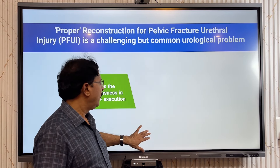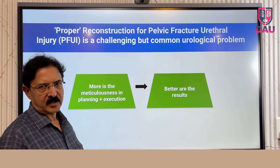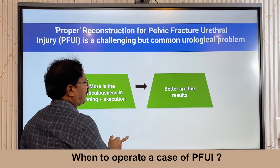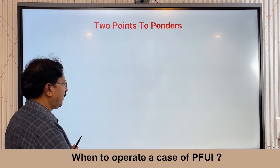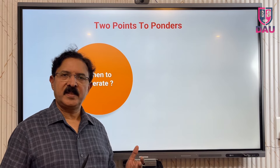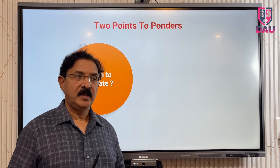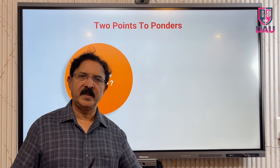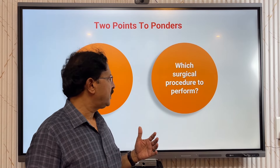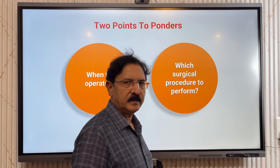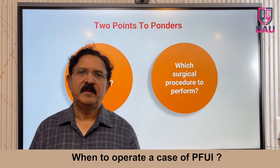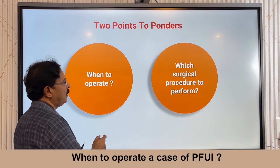We need to concentrate on the planning part to get the best results. There are two points to ponder: first, when to operate — a patient will come to you with PFUI, possibly on a suprapubic catheter, and you have to decide whether to operate now or postpone. The second decision is which surgical procedure to perform. In the present video I will talk about the first point: when to operate.